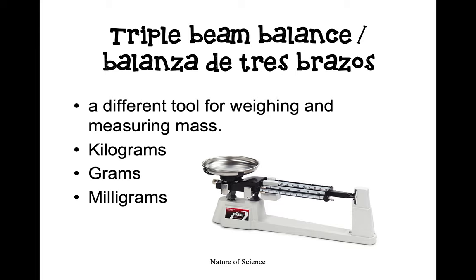Next, we have a tool called a triple beam balance. A triple beam balance is a different tool for measuring and weighing mass. It's called the triple beam balance because it has three beams — a beam for milligrams, a beam for grams, and a beam for measuring kilograms. If I wanted to measure a bowling ball, what unit on the triple beam balance would I probably use — milligrams, grams, or kilograms?